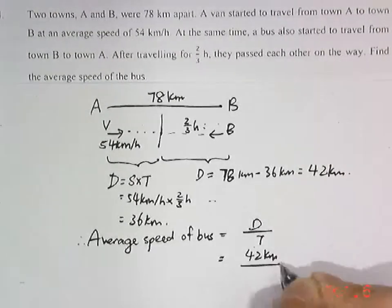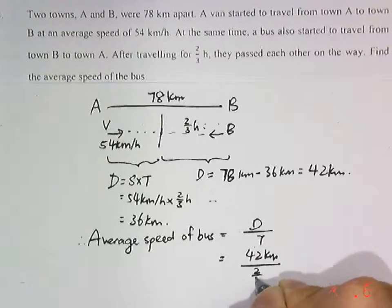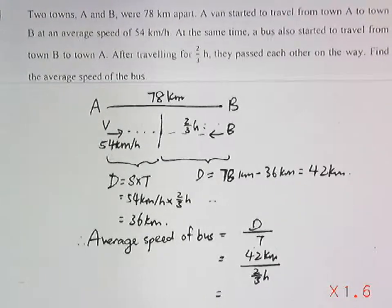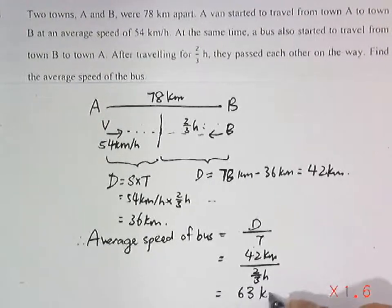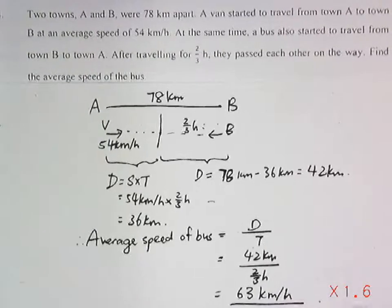Total distance 42km, total time 2/3 hours. We can get the answer: 63km per hour.